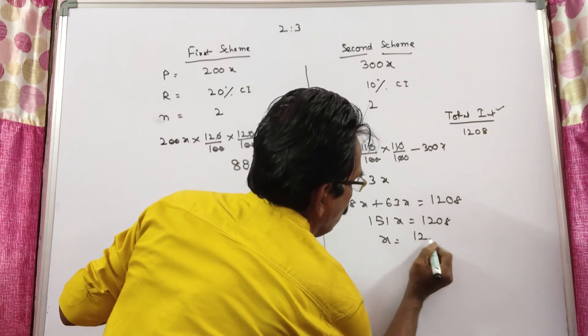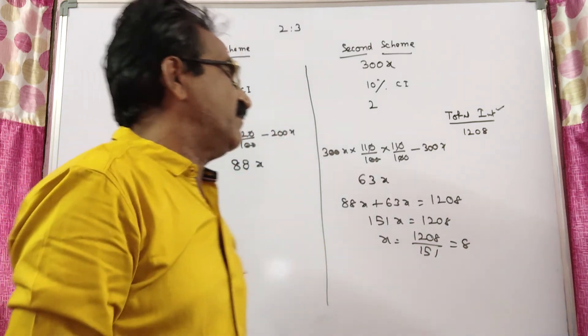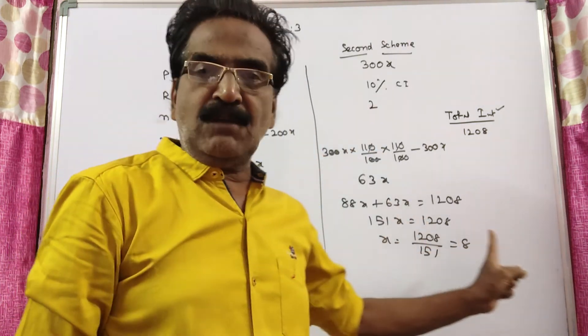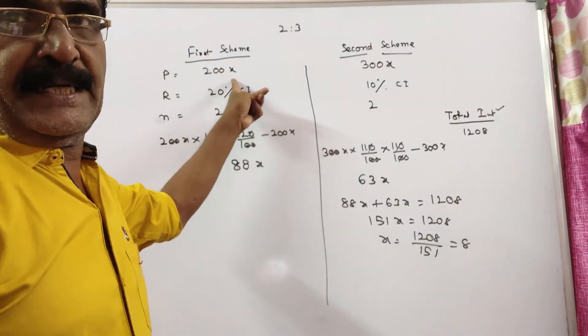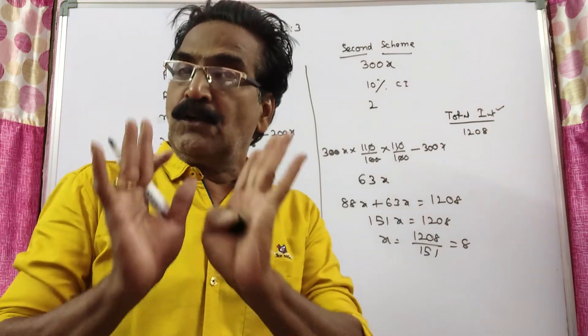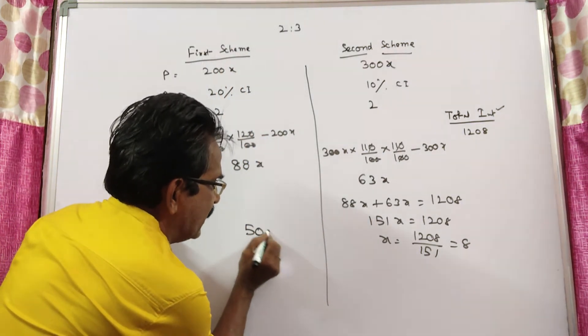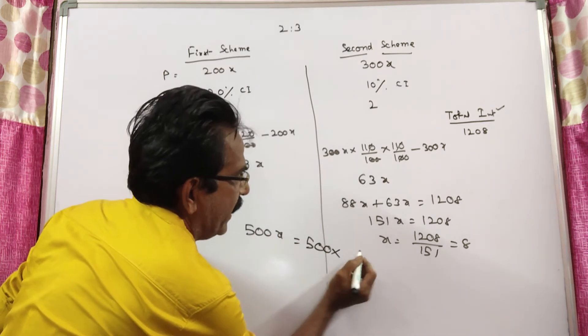X is equal to 1208 by 151, so x is equal to 8. Now the sum invested is here 200x, here 300x, total 500x. Sum invested 500x, that is equal to 500 into 8.